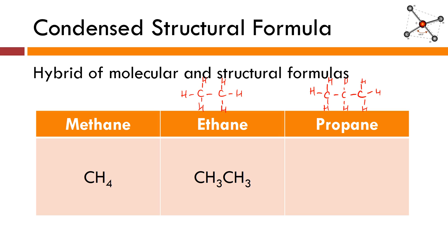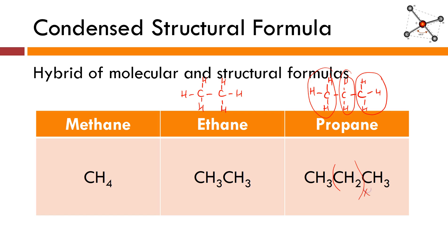See if you can figure out propane on your own. If you're thinking CH3, CH2, CH3 — you are absolutely correct. As straight-chain alkanes become longer and longer, instead of writing CH2 ten times or whatever you need, it's not uncommon to put parentheses around the CH2 and use the appropriate subscript. For example, butane — C4H10 — would be written as CH3(CH2)2CH3. That's a shortcut to prevent you from having to write extremely long formulas.